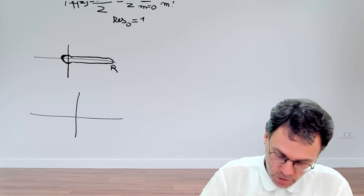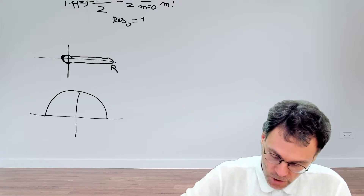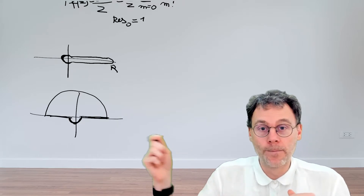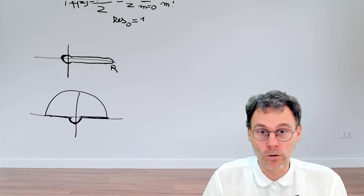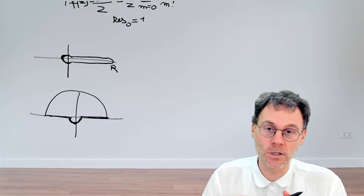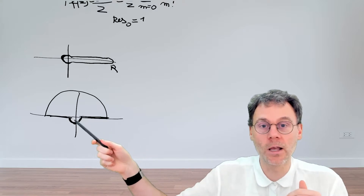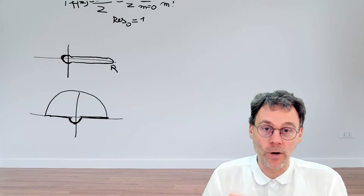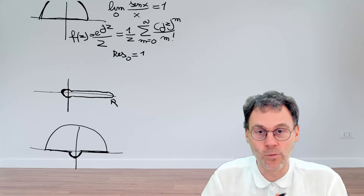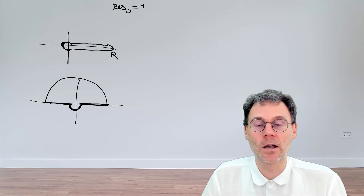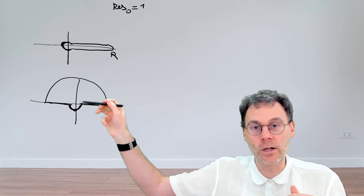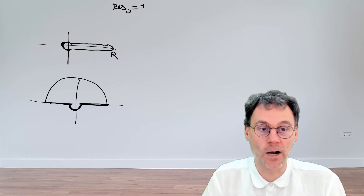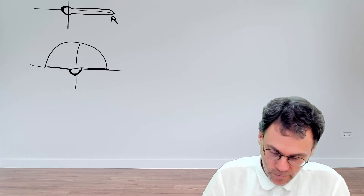We know we need to avoid the singularity at the origin and close in the upper half-plane. One option is to avoid the singularity with a small arc closed in the lower half-plane — that works in theory and practice, but the singularity ends up inside the contour, requiring us to calculate the residue (which is 1). It's more efficient to close the small arc in the upper half-plane instead, giving zero singularities inside the contour and no residue calculation needed.